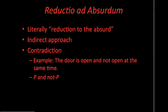So contradictions — those in the form of P and not P — doom arguments. When we find that a contradiction follows from an argument, we know that something is wrong in the argument itself. So we go looking at premises to see where the problem lies.